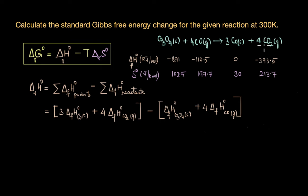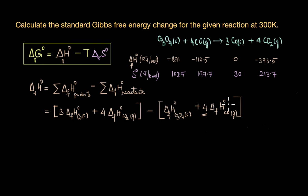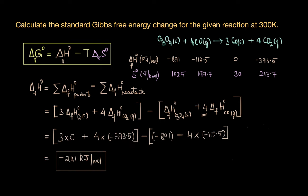We get: 3 × ΔH°f(Co) + 4 × ΔH°f(CO₂) − [ΔH°f(CO₃O₄) + 4 × ΔH°f(CO)]. Remember, most students forget to include the stoichiometric coefficients — otherwise it's a straightforward calculation. Incorporating all values gives a final answer of −241 kJ/mol.